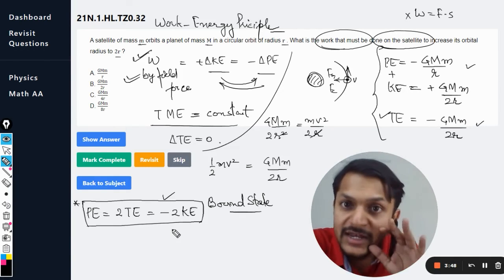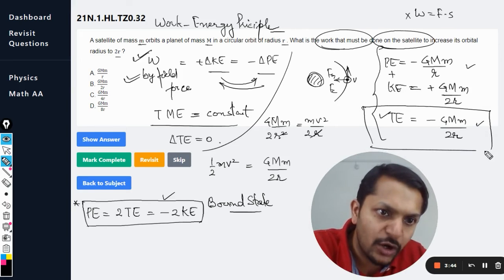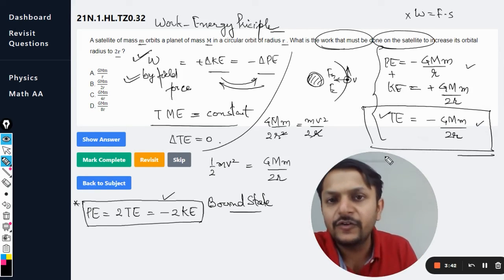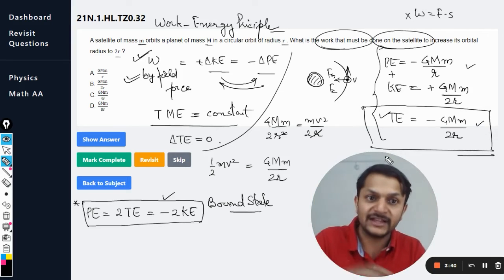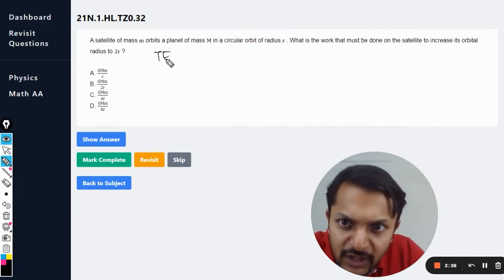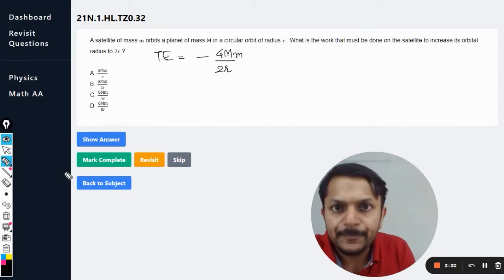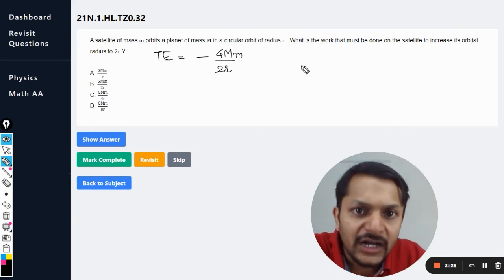Now we are coming to your question and we are going to concentrate only on this one single formula, having set all these things. I'm deleting everything. The formula for the total energy is minus GMm divided by 2r.